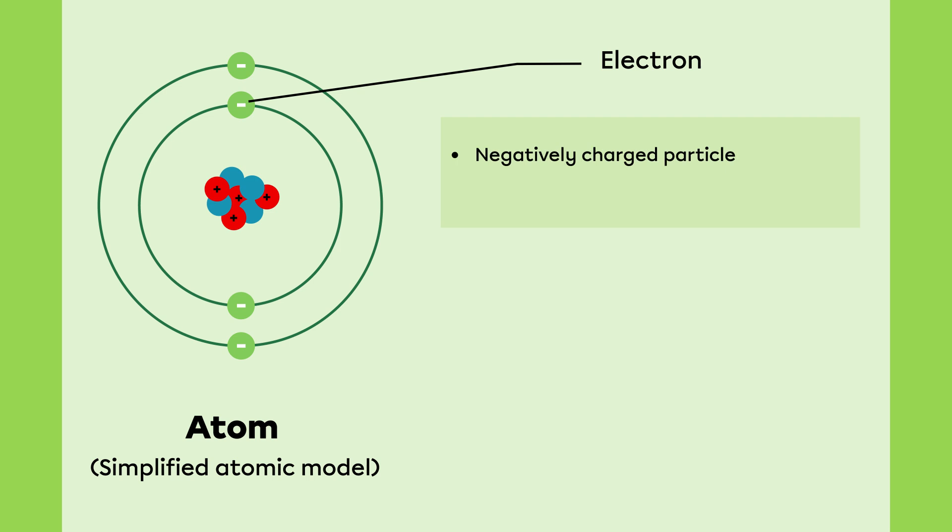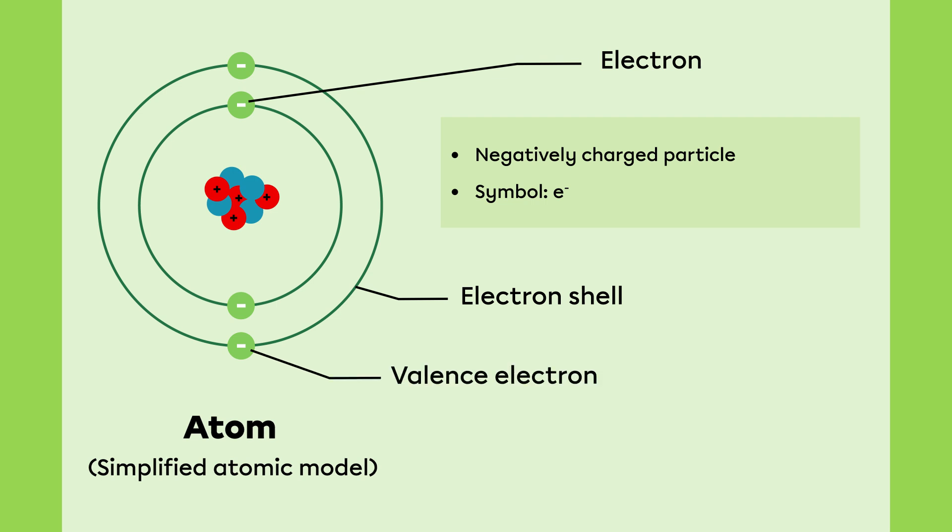Electrons are negatively charged particles, represented by the symbol E-. According to the simplified atomic model, electrons are located on electron shells. The electrons on the outermost electron shell are called valence electrons. They make it possible for the atom to form chemical bonds with other atoms.